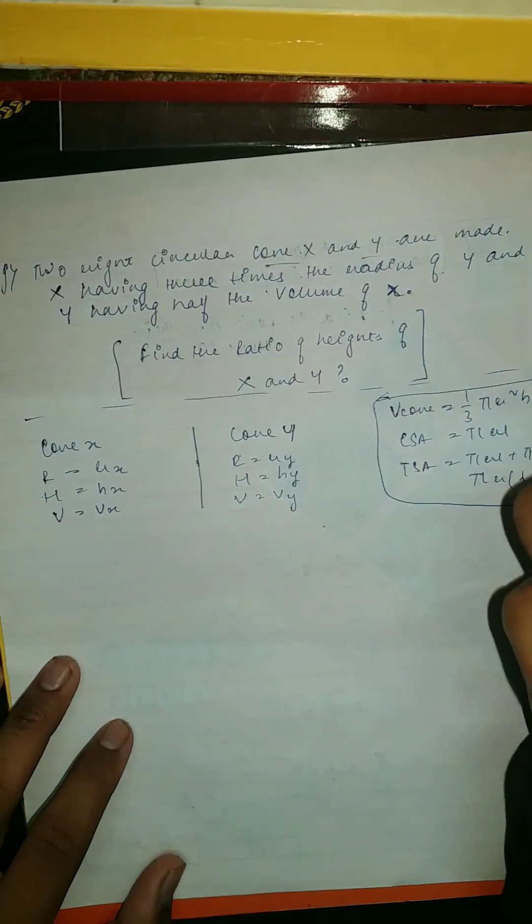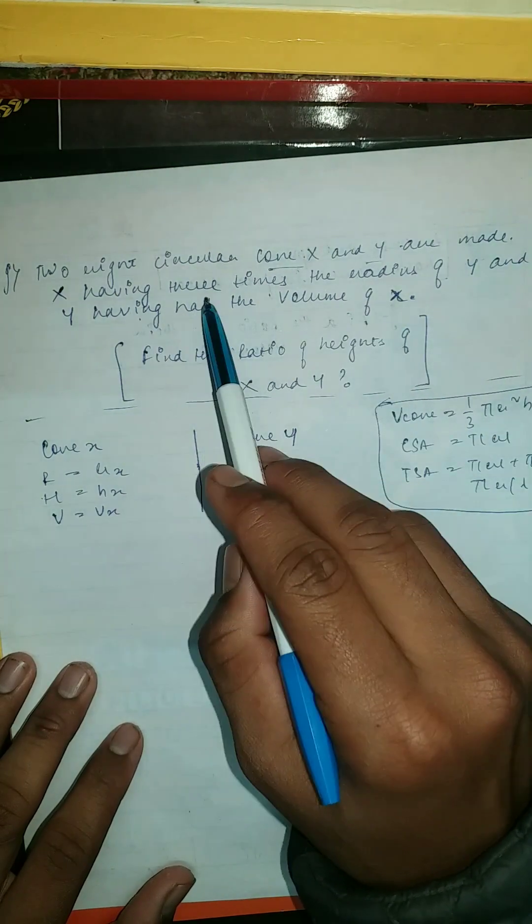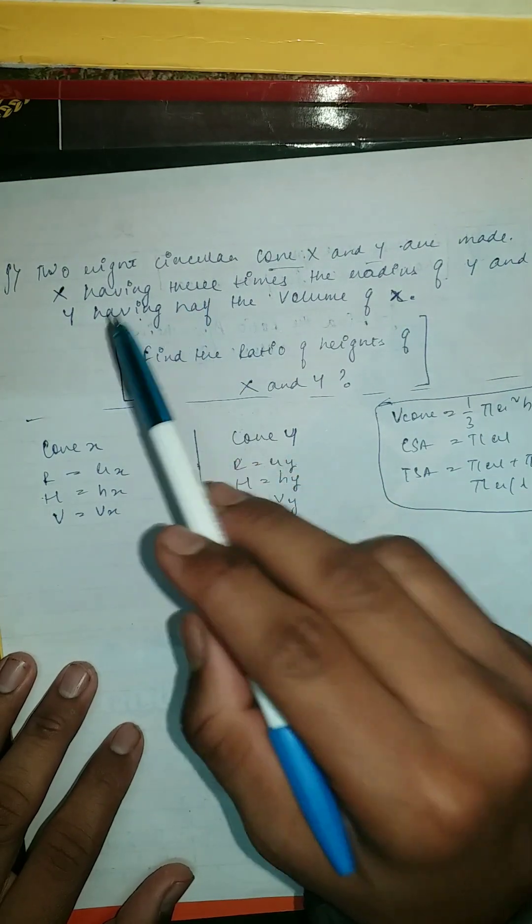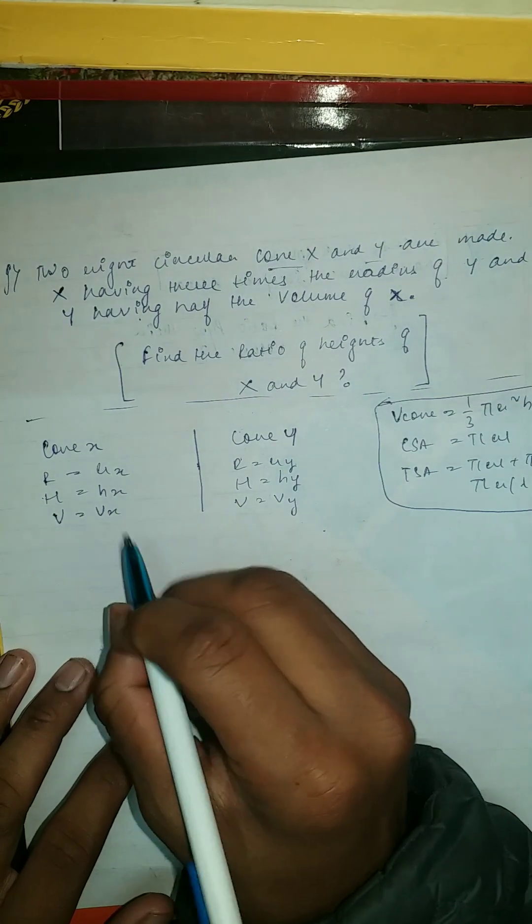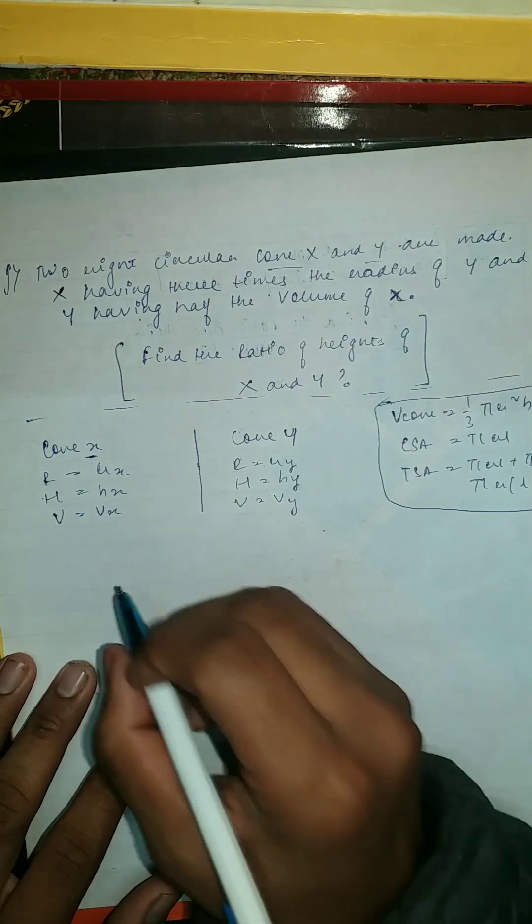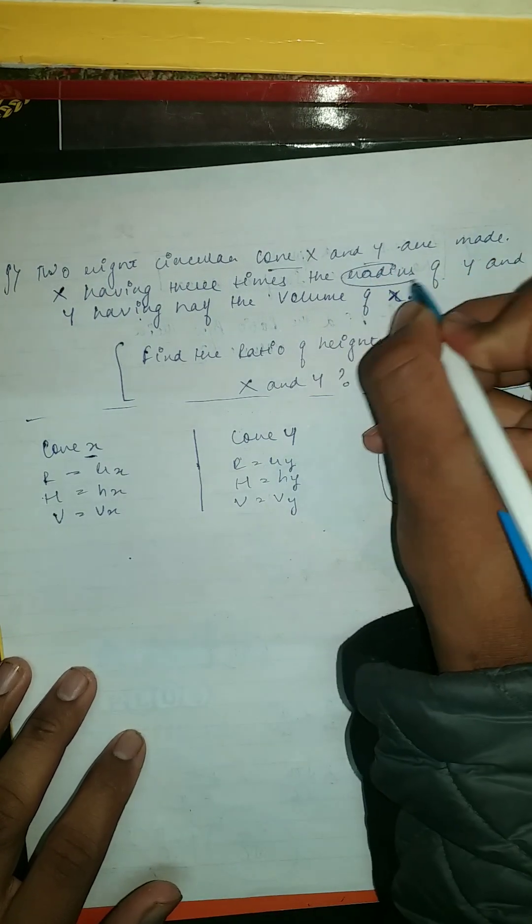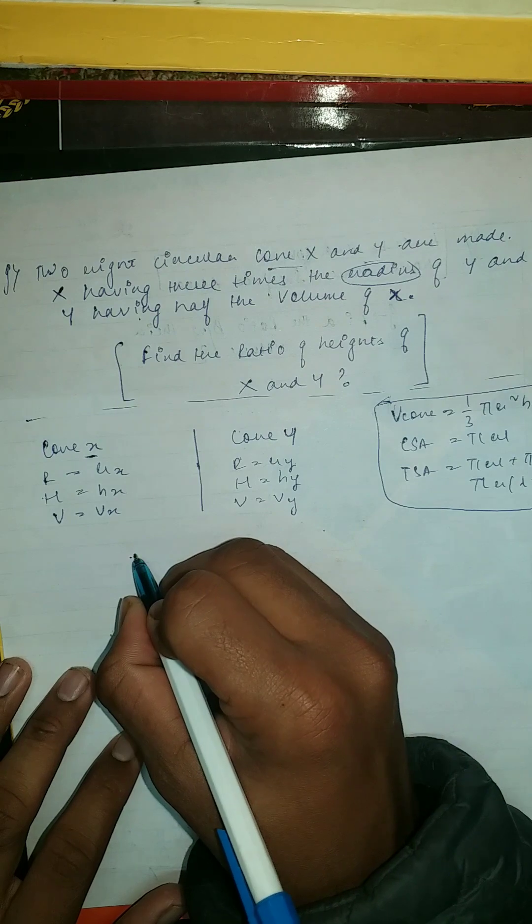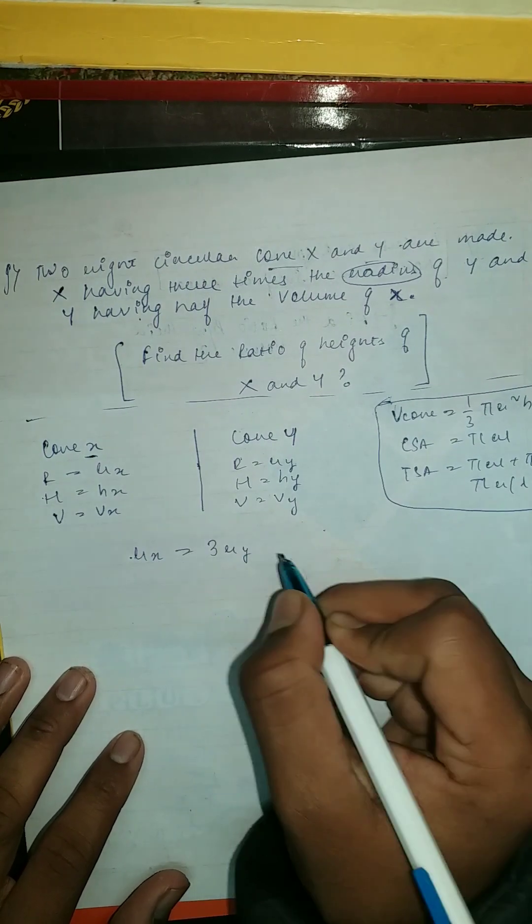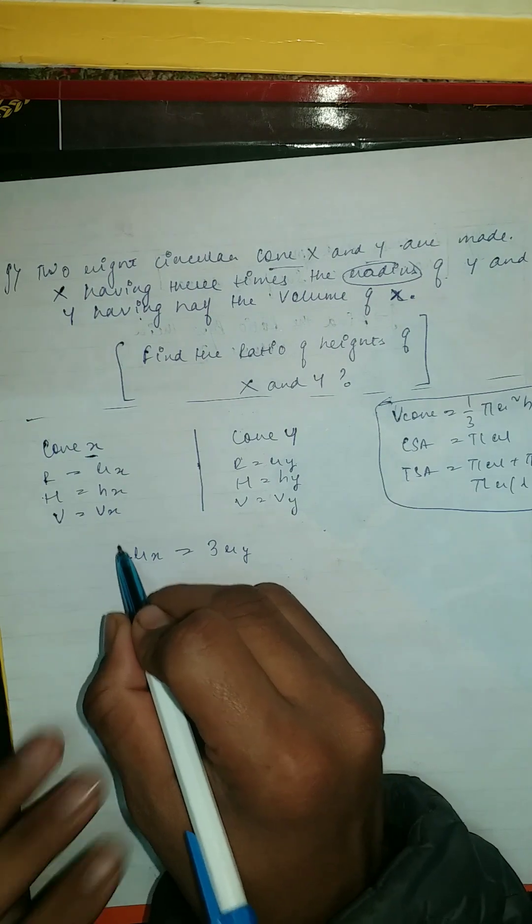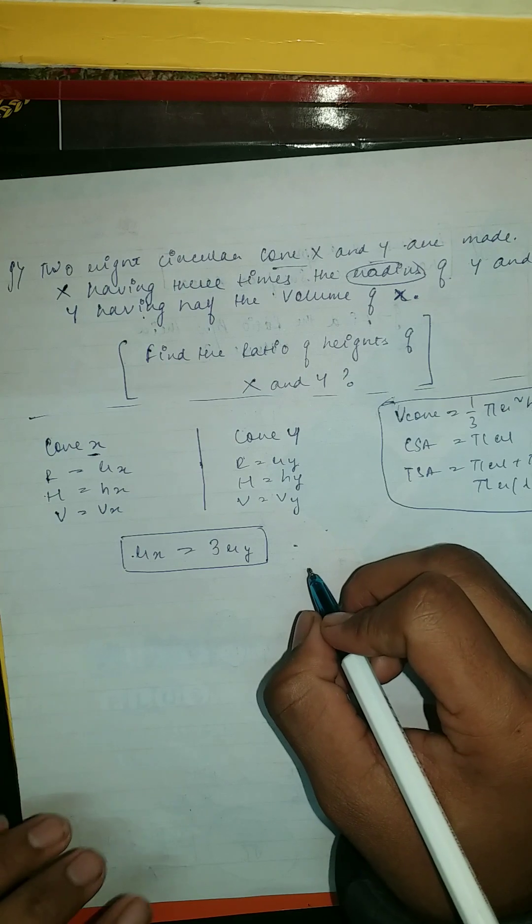Here the condition is X having three times the radius of Y. It means cone X, if you're talking about radius, so rx equal to 3ry. This is first.